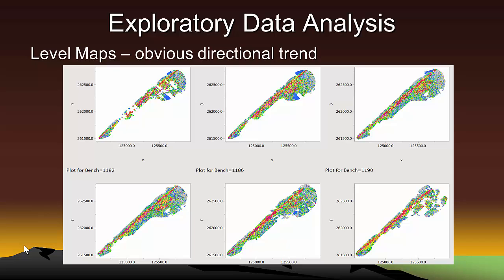The elevation differences between benches is 4 meters. It's very obvious from these maps that the gold mineralization is controlled by either a shear fault system or a system of veins. So we can expect a variogram model with a strong anisotropy, where the direction of the major axis of the anisotropy is at an approximate azimuth of 45 degrees.